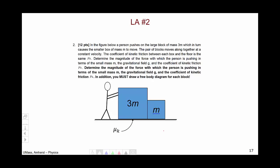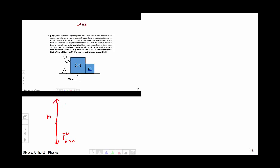This brings us to long answer number 2, where you are looking to solve for the magnitude of the force with which the person is pushing in terms of m, g, and the coefficient of kinetic friction mu_k, and you're required to draw a free body diagram for each block. For block m, the smaller one, we have the force of weight from the earth on m, the normal force from the ground on m, the normal force from 3m on m, and the force of kinetic friction from the ground on m.